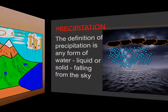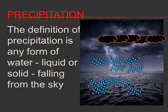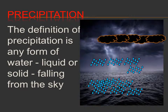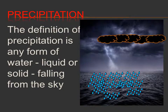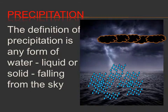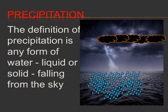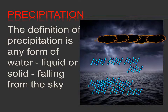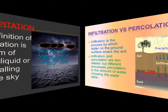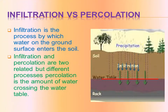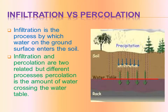Next, Precipitation: precipitation is any form of liquid or solid falling from the sky. Next, Infiltration versus Percolation: infiltration is the process by which water enters the soil surface. Percolation is the process by which water moves deeper through the soil, crossing the water table. Infiltration and percolation are two related but different processes, and both are measured in inches per hour.